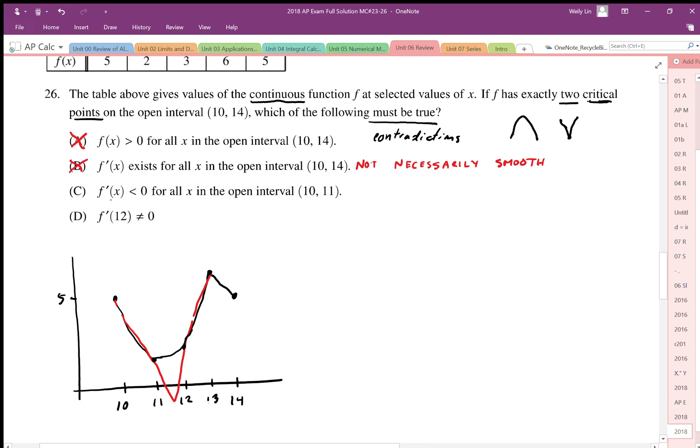f prime is less than zero for the whole interval from 10 to 11. From 10 to 11, I'm just going to get rid of this red part here. We don't know that f prime is less than zero, because it could go down and back up through that point. And then that would mean that in this section here, we have a positive slope. So again, that's not necessarily true. We're going to get rid of that.